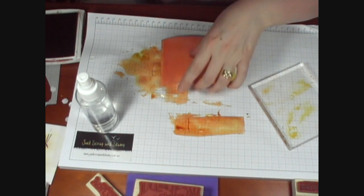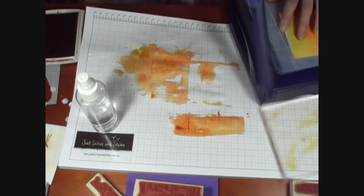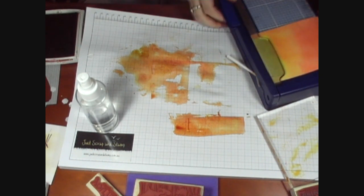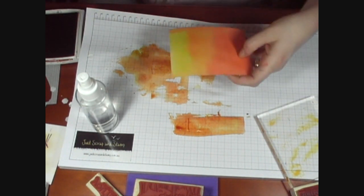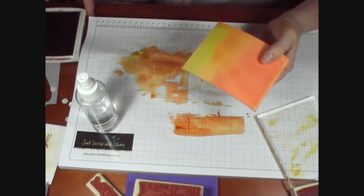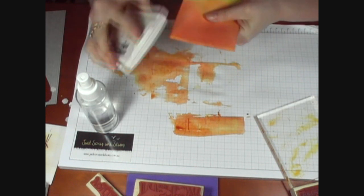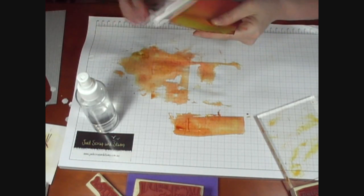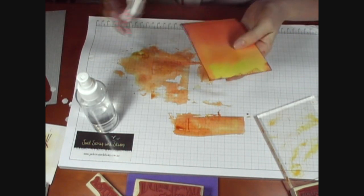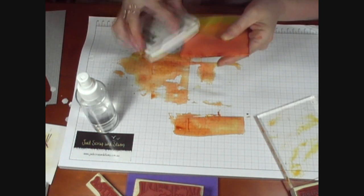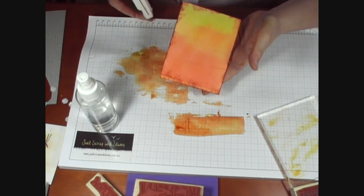Now I'm just going to trim the edge off there that I've missed the color of. Now to give it a little bit of added dimension, I'm just going to use the darker orange rust pad and use the direct-to-paper technique and just rub some ink onto the edges of the cardstock. You don't have to be too precise because you do actually want a little bit of color to rub onto the edges like so.